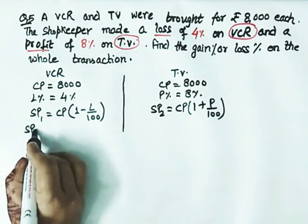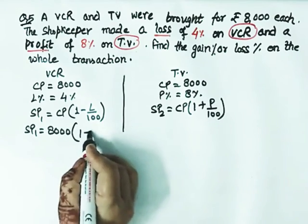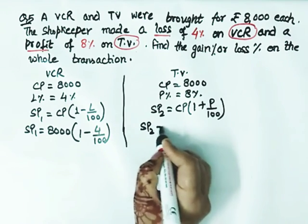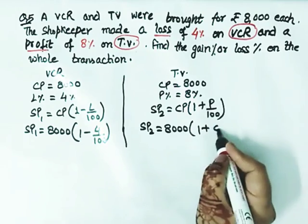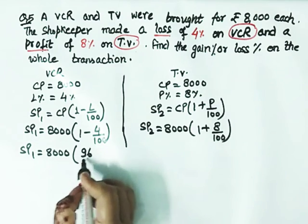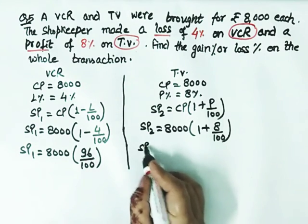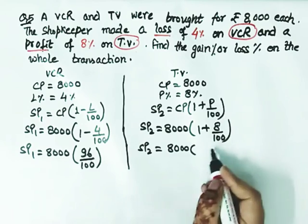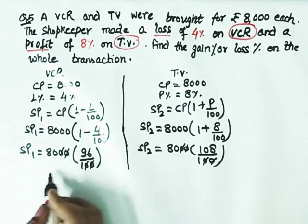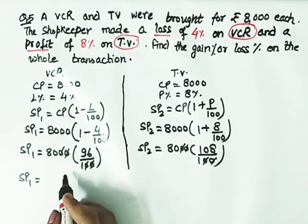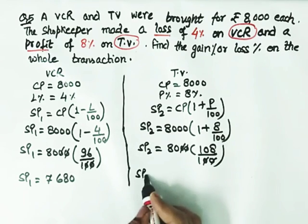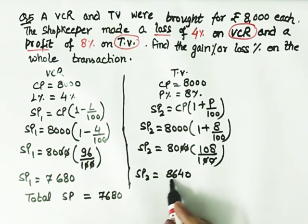You can see the formulas together to make it easy to understand. Now we find SP1. Our CP is 8,000, multiplied by 1 minus 4 upon 100. Similarly, we need to find this SP. 8,000 is the CP, profit is 8%. So SP1 becomes 8,000 multiplied by 96 by 100. And here SP2 is 8,000 multiplied by 108 by 100. Cancel zeros. So what will SP1 be? Multiplying by 96 gives 7,680. And SP2 will be 8,640.